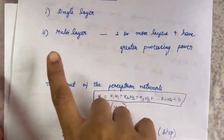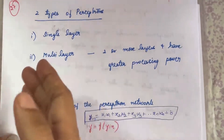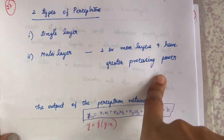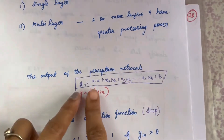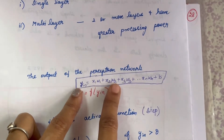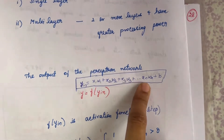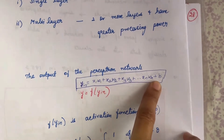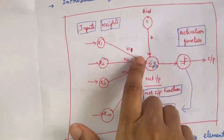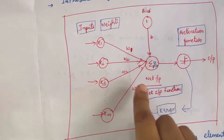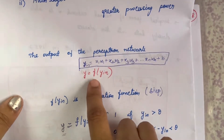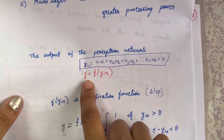You can also have multi-layer perceptron, which means there will be two or more layers, and this will be used when you want to have greater processing power. The output of the perceptron network — we will call it y_input — will be equal to: x1·w1 + x2·w2 + x3·w3 + ... + xn·wn + 1·b. That is your y_input.